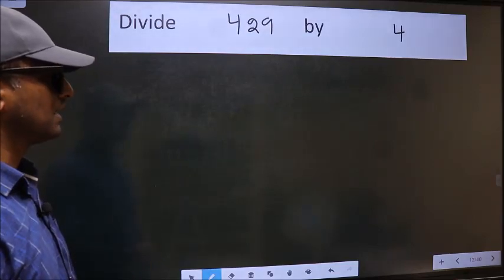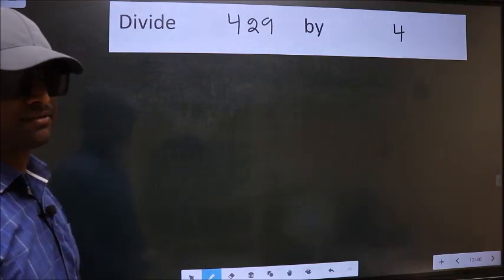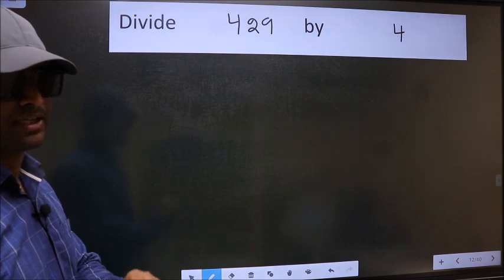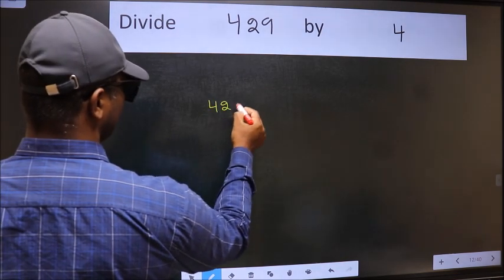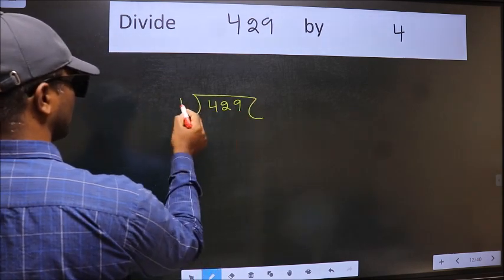Divide 429 by 4. To do this division, we should frame it in this way: 429 here and 4 here.